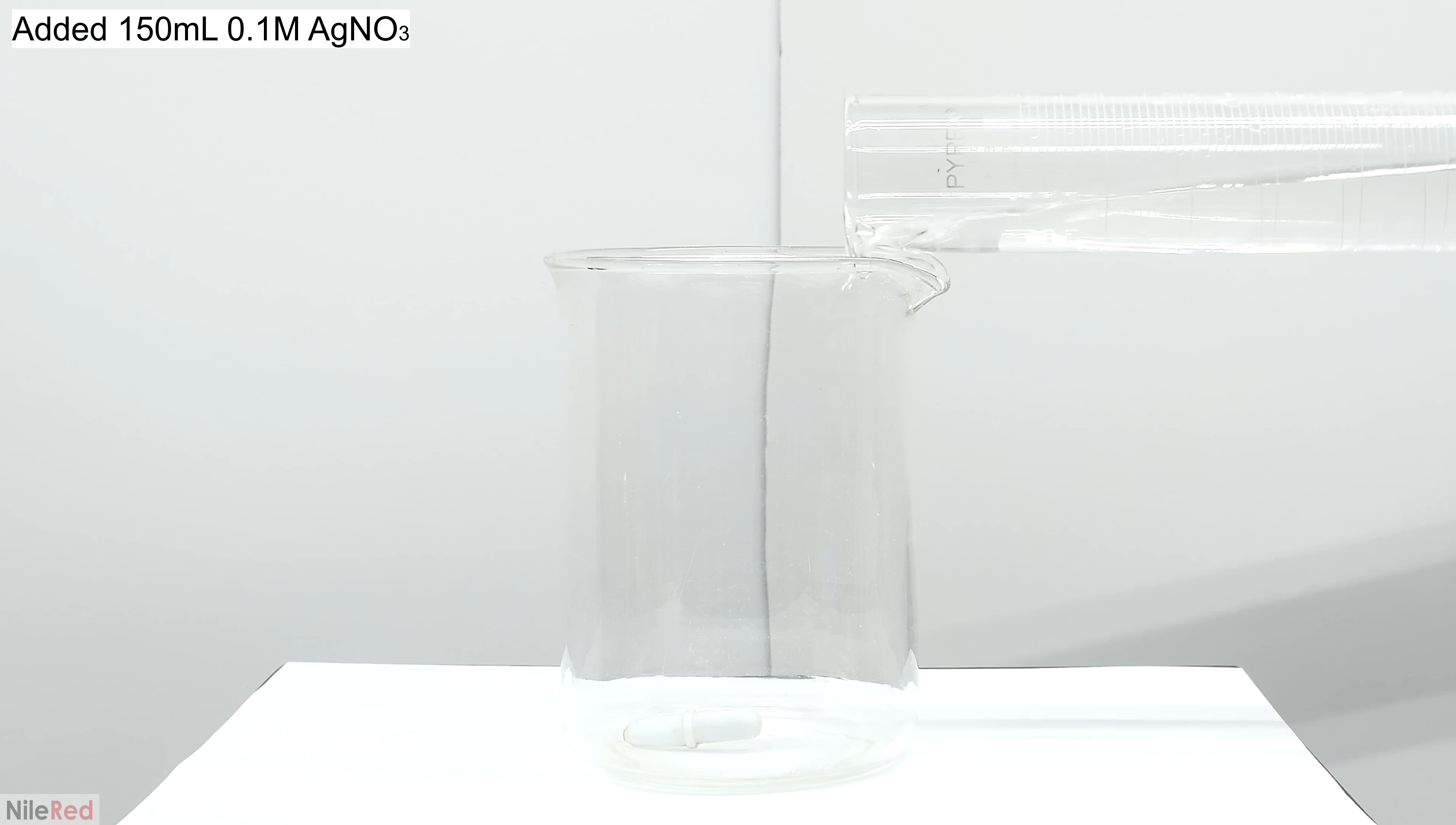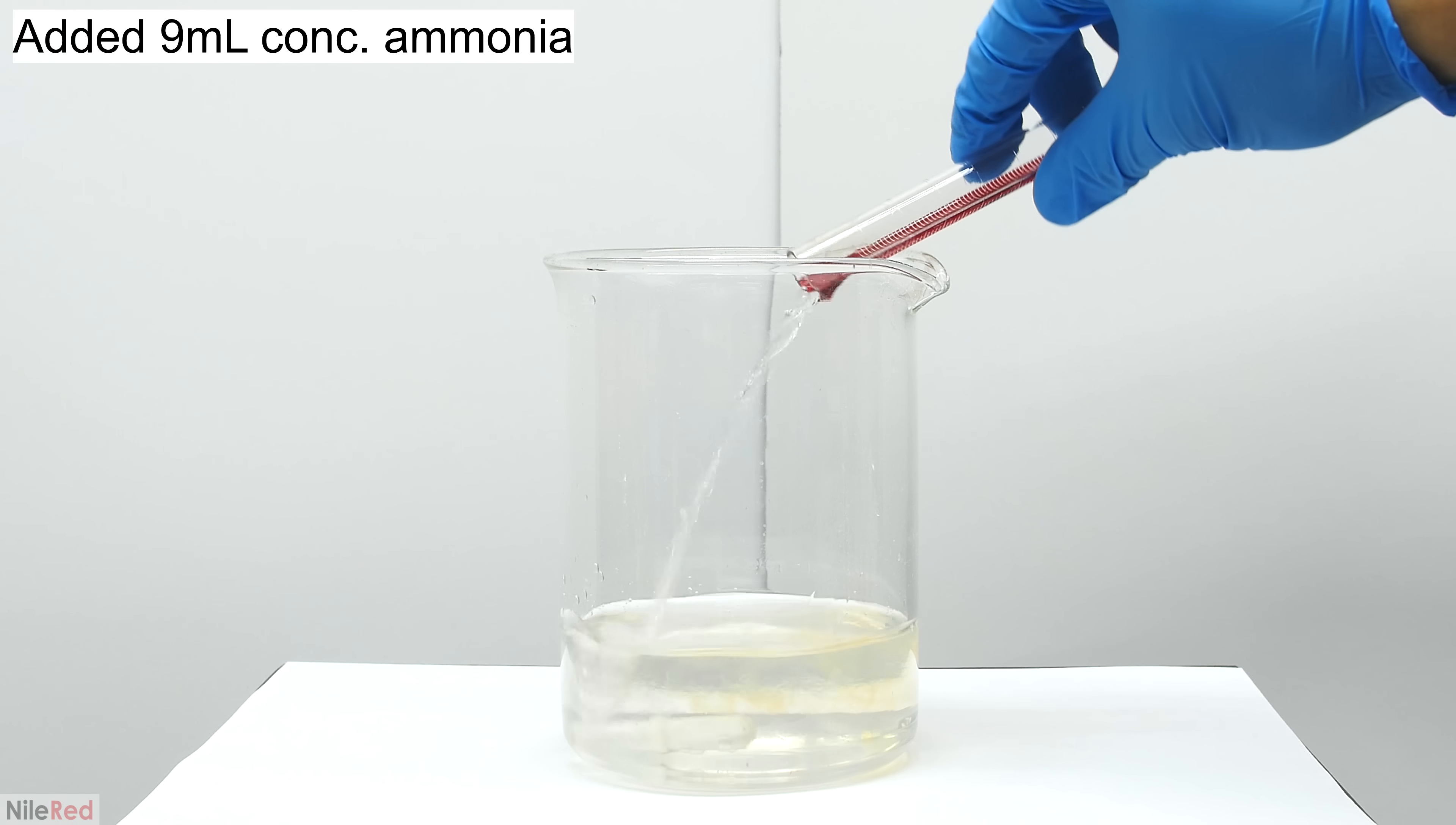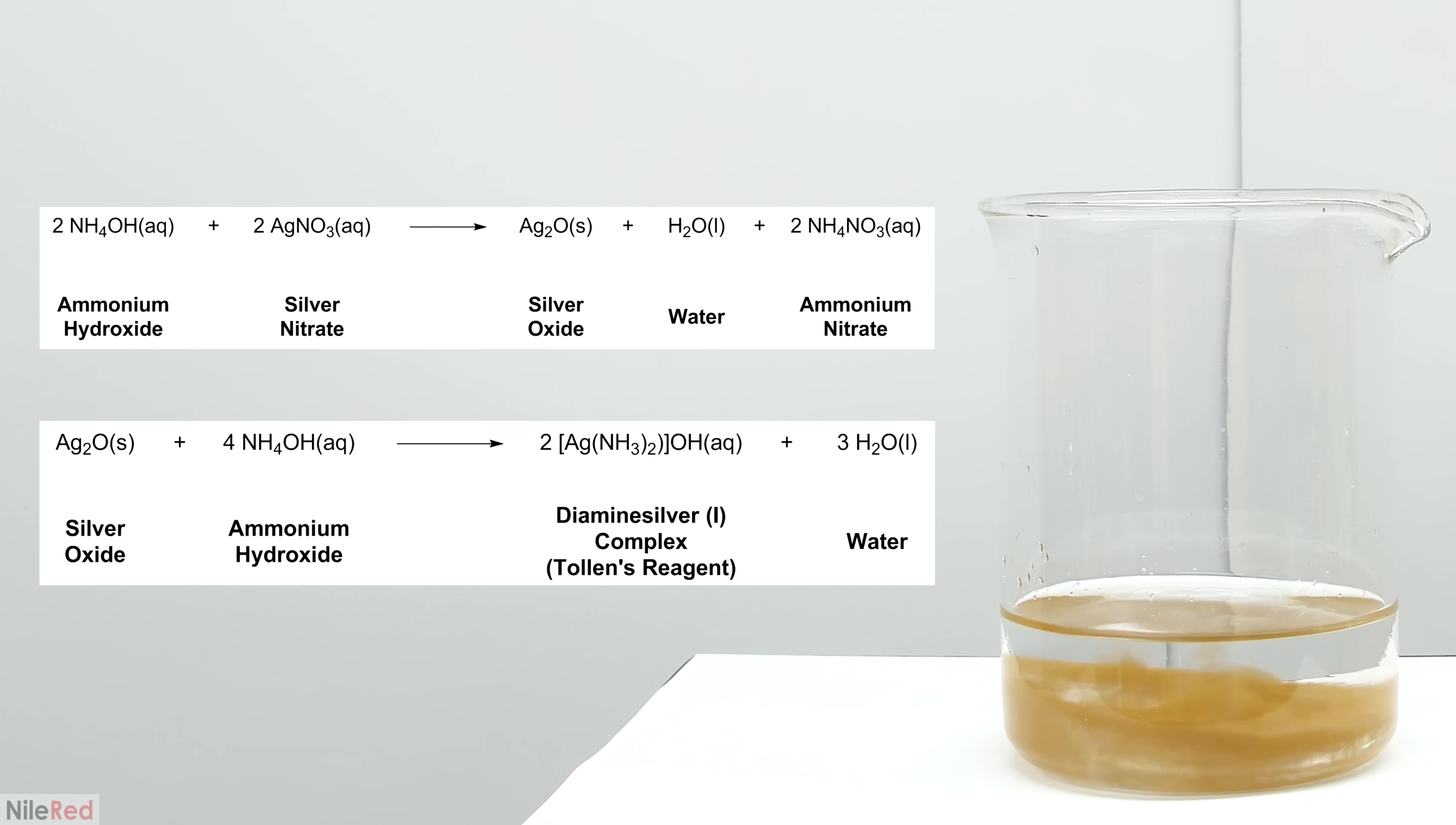Now it's time to make the Tollens reagent. To start things off, I measure out 150 milliliters of the silver nitrate solution. I then pour in 9 milliliters of concentrated ammonium hydroxide. This leads to the formation of brown silver oxide. However, in the presence of ammonia, silver oxide will react with it and form a soluble complex.